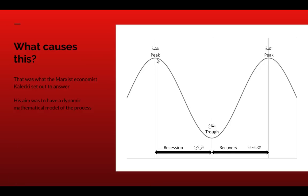What causes this structure? Why do you have a peak, a recession, a trough, then an upswing with a recovery? That's the question the Marxist economist Kalecki set out to answer. His aim was to have a dynamic mathematical model of the capitalist cycle, and as far as I know he was the first person to come up with such a dynamic mathematical model from the Marxist economists.